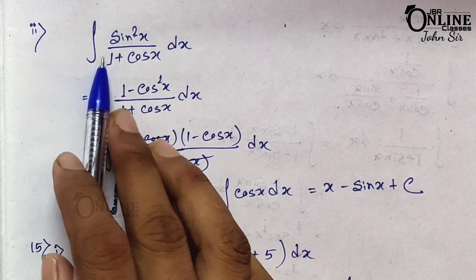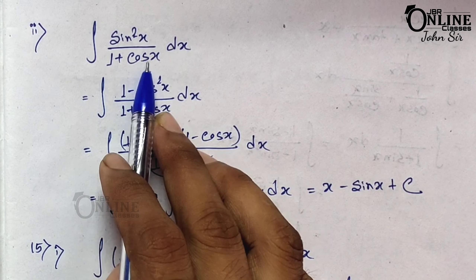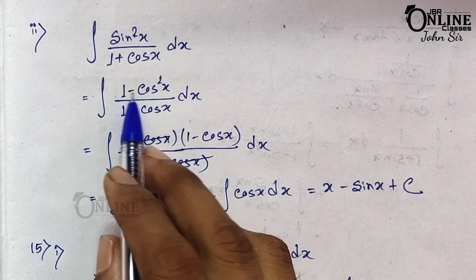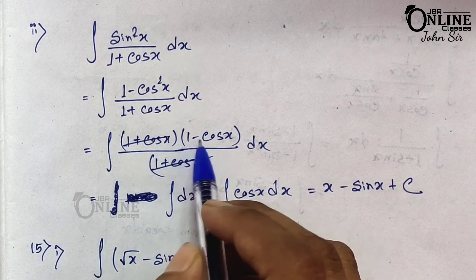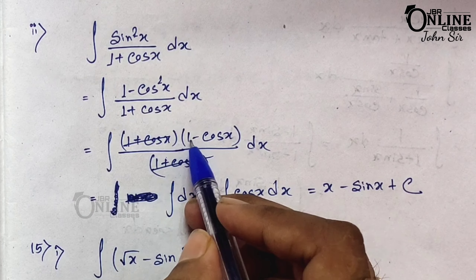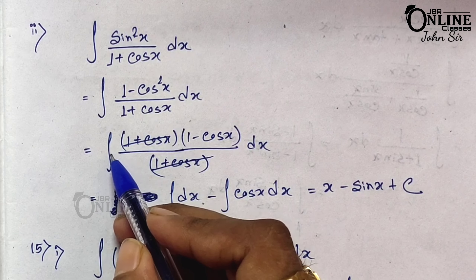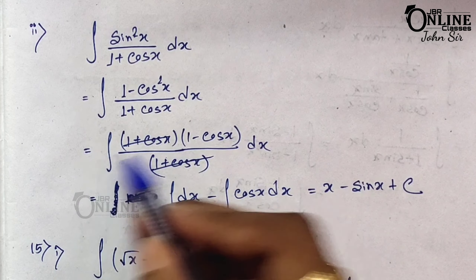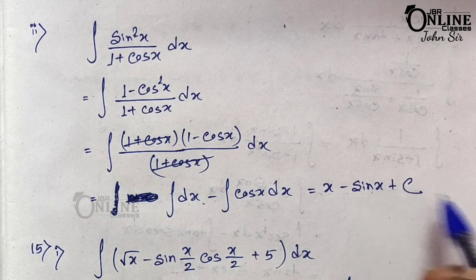Sum 14.2: integration of sin²x / (1 + cos x). Using sin²x = 1 − cos²x = (1 + cos x)(1 − cos x), the (1 + cos x) cancels. So we integrate (1 − cos x) dx, giving x − sin x + c.